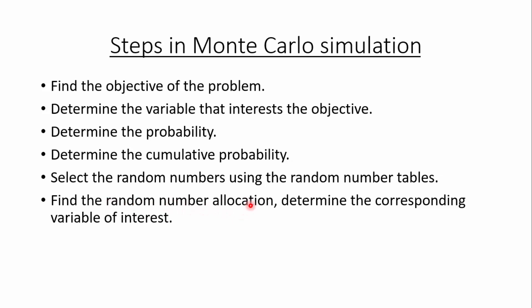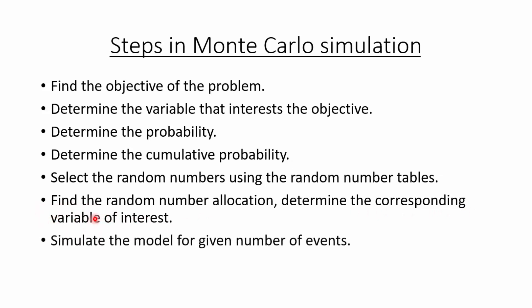After finding the random number allocation, we are able to determine the corresponding variable of interest — that means we find the value of the selected variable. After getting the value of these variables, we need to simulate the model for the given number of events. These are the procedures laid down, and let us understand this with the help of our example problem.